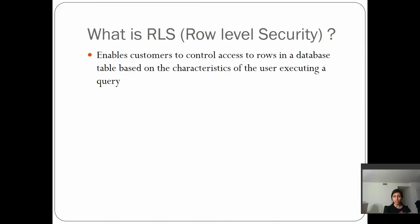Row Level Security is nothing but granting the user permissions to view certain records — a few records in the table rather than allowing them to view all the records. To implement Row Level Security, you need to follow certain steps in SQL Server.